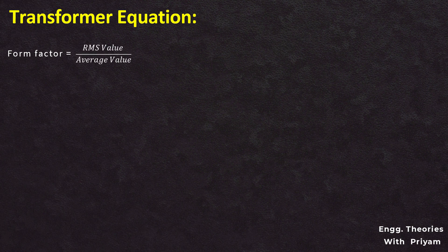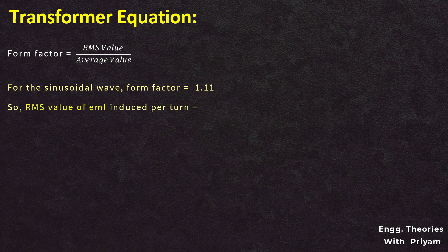Now, we know that form factor equals RMS value divided by average value, so RMS value equals form factor multiplied by average value. For a sinusoidal wave, the form factor is equal to 1.11. So the RMS value of the induced EMF per turn equals 1.11 multiplied by the average value of 4Fφm volts, which equals 4.44Fφm volts.